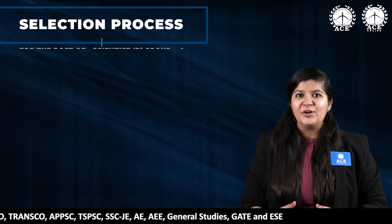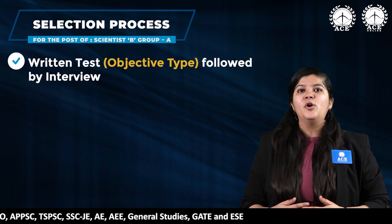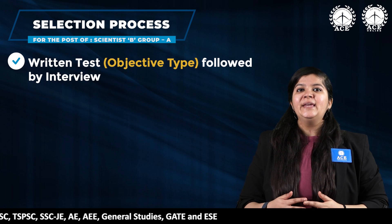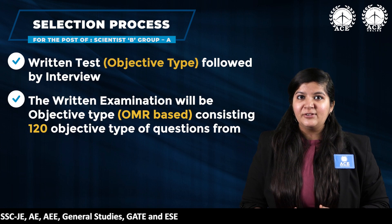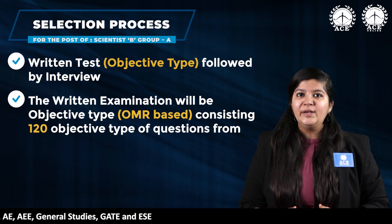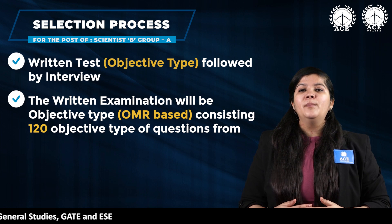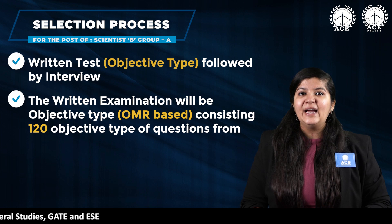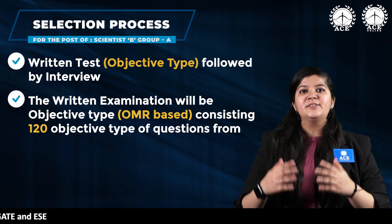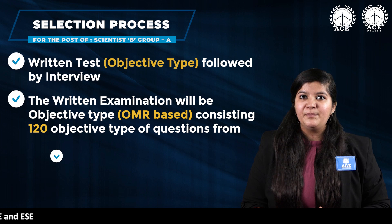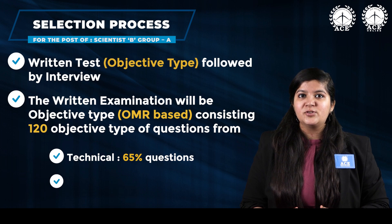Now we will talk about the selection process. Your selection will be done on the basis of a written test followed by an interview. The written test will be objective type, comprising 120 MCQ questions from the technical area and the generic area. Questions from the technical area carry 65% weightage and questions from the generic area carry 35% weightage.